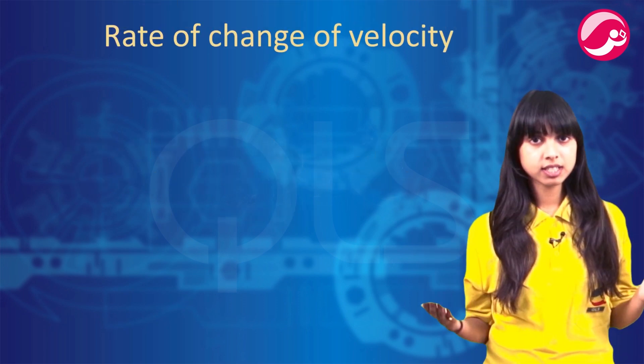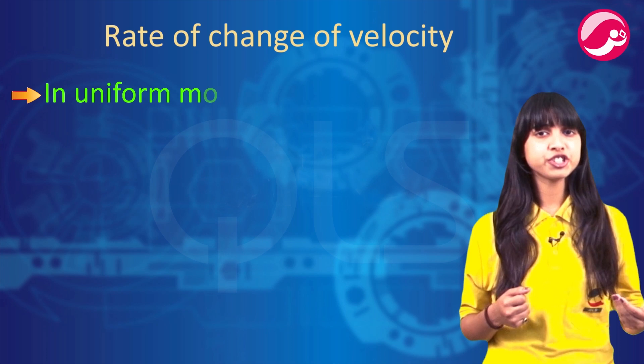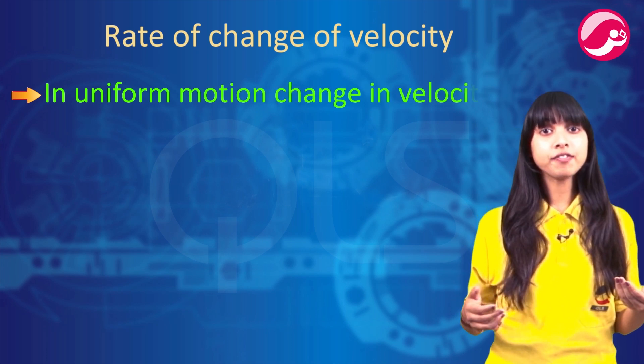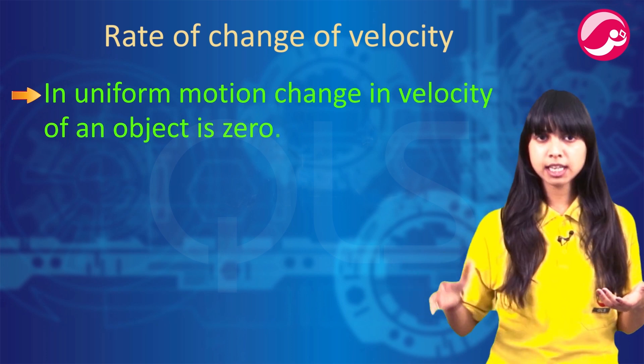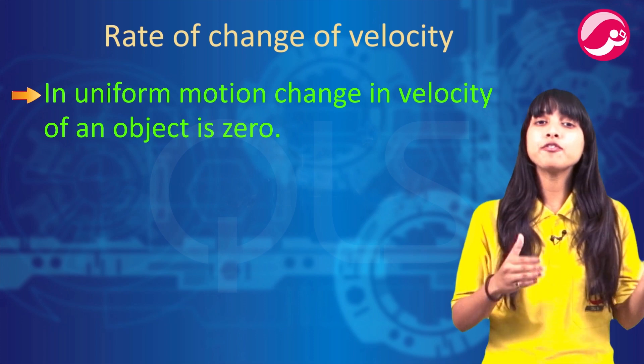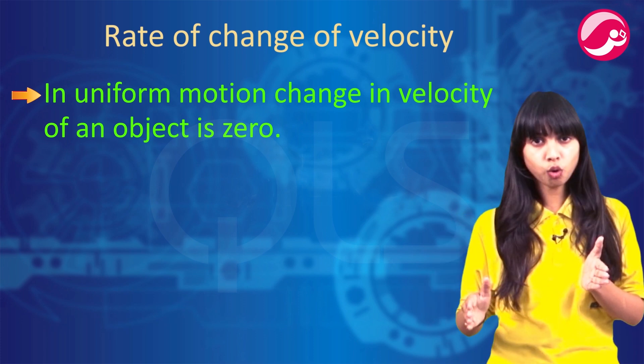First topic: rate of change of velocity. In uniform motion, change in velocity of an object is zero. Why? Because it is in uniform motion, so the velocity of change is zero.